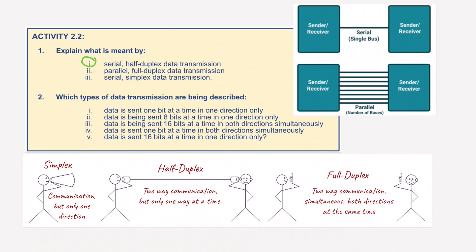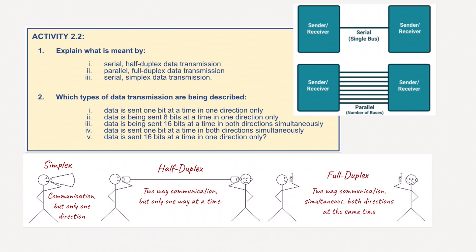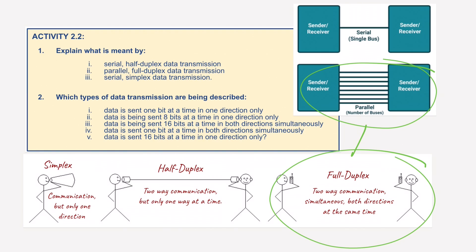So to answer the questions: serial half-duplex would mean a single wire using one single bus going in one direction, but half-duplex means it could travel in both directions, just not at the same time. For the second one, parallel full-duplex transmission uses multiple wires because it's parallel, and we're using full-duplex — so data can flow in both directions at the same time.